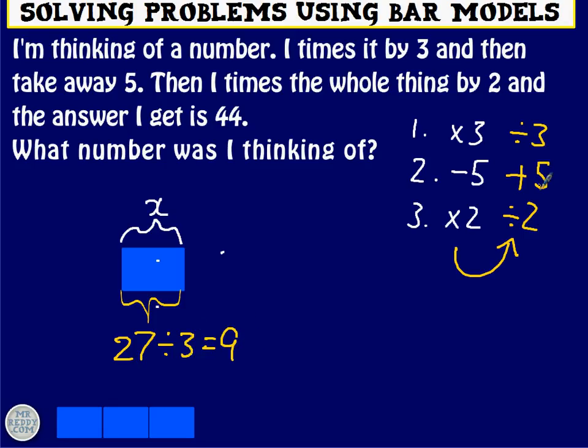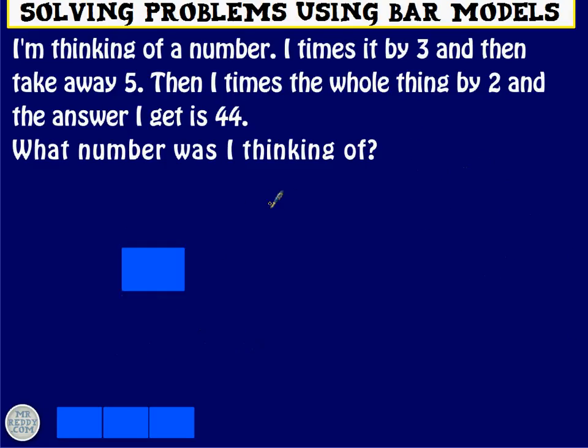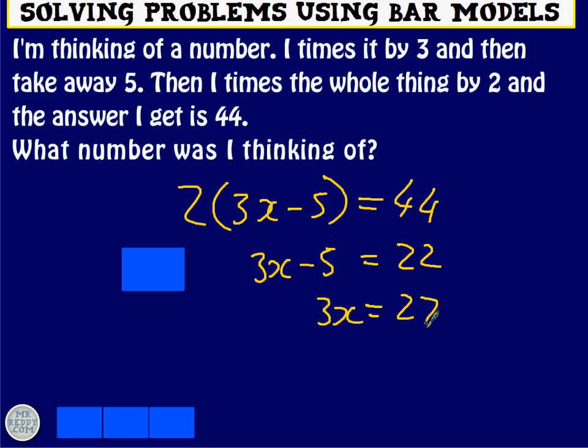What has happened algebraically? Well, we started with x, timesed it by 3, and took away 5. And then times the whole lot by 2. And that answer came to 44. Then we divided by 2, so you've got 3x take away 5 equals 22. Then we added 5, so we've got 3x equals 27. And then we divided by 3, so we get x equals 9. So there we go. All done.